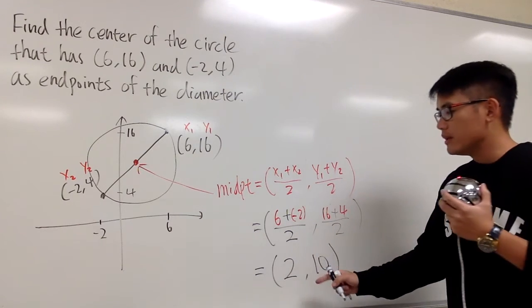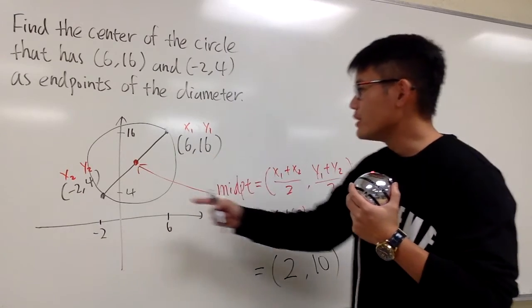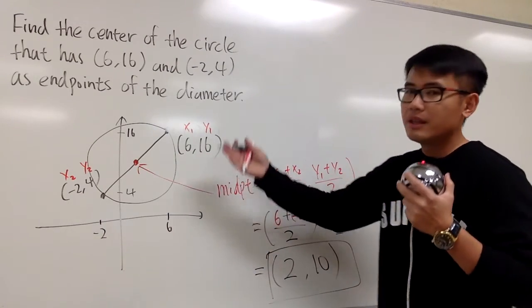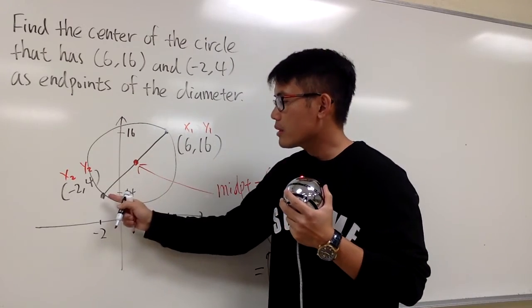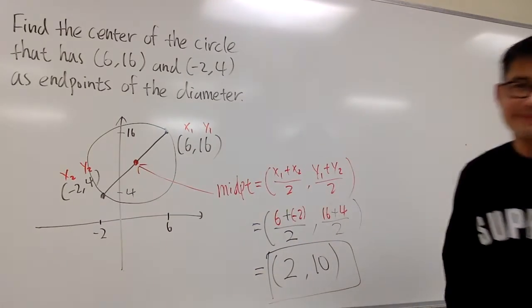Therefore, the answer is 2, 10. This is also the center of the circle. Okay? It happens to be the midpoint between the endpoints of the diameter. And this is it. Thank you.